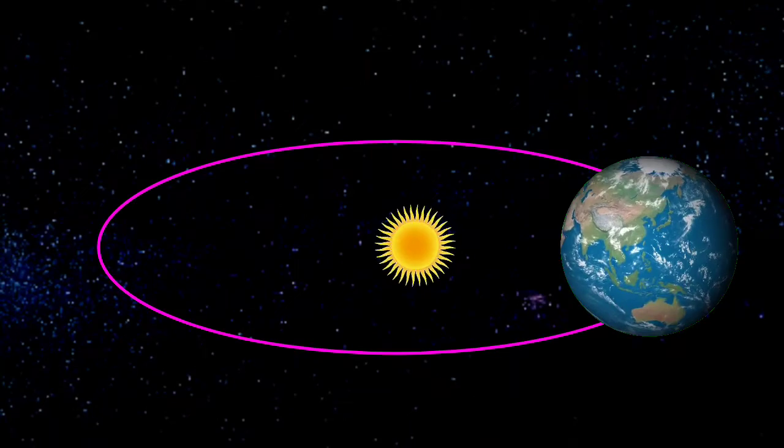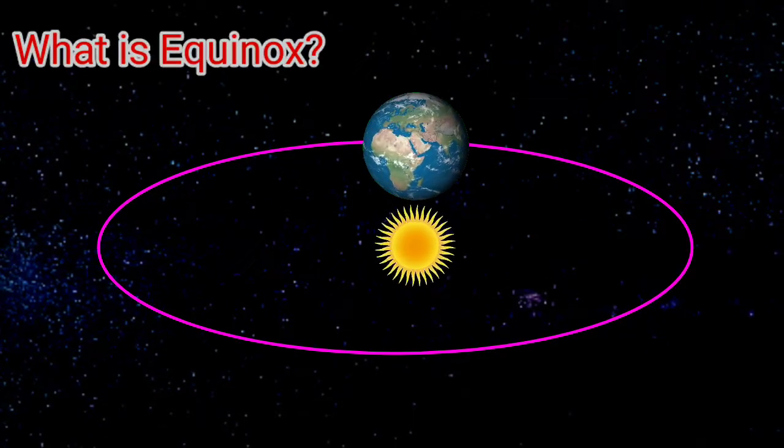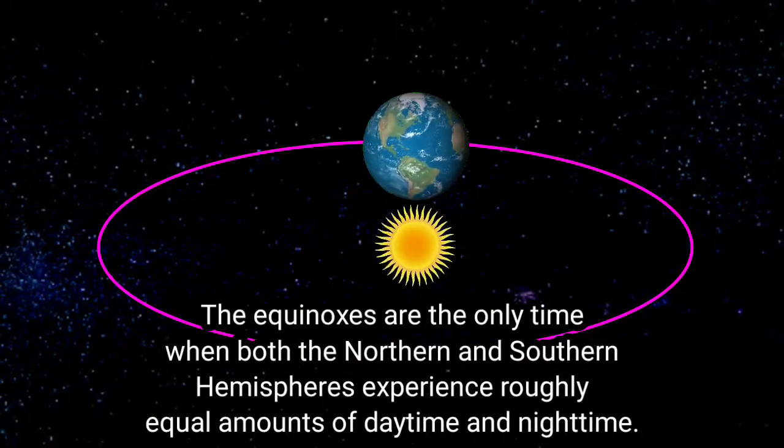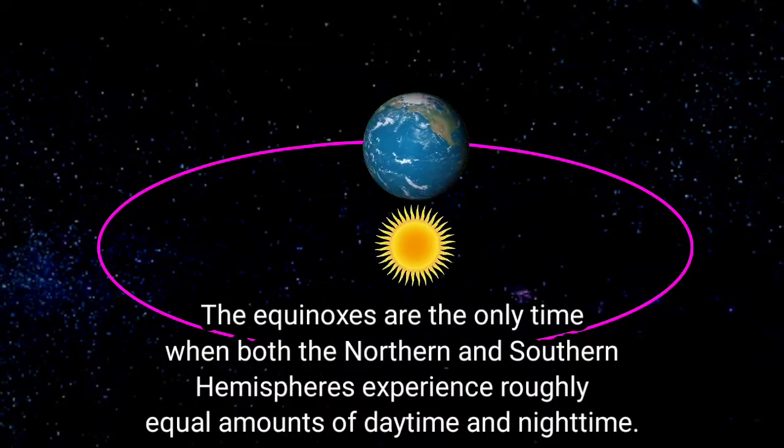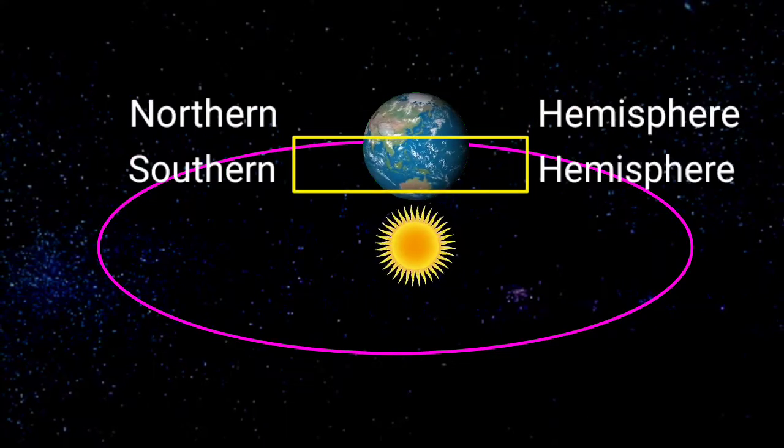Coming to the last point, that is equinox. Equinoxes are only the time when both the northern hemisphere and the southern hemisphere experience roughly equal amounts of daytime and night. That means during this time, the length of the day and night, it is equal.